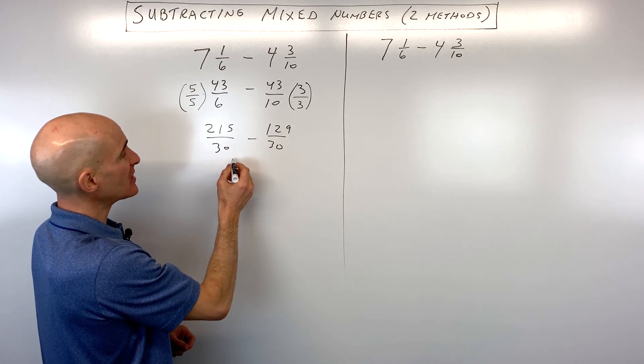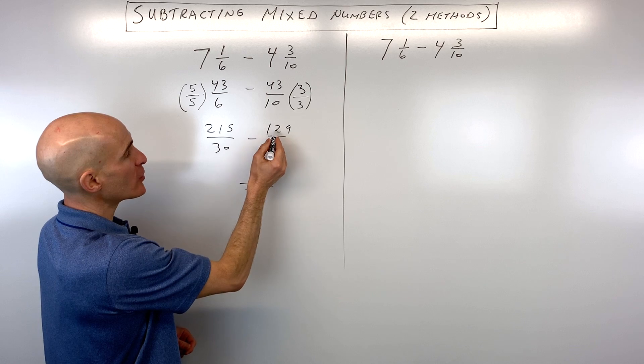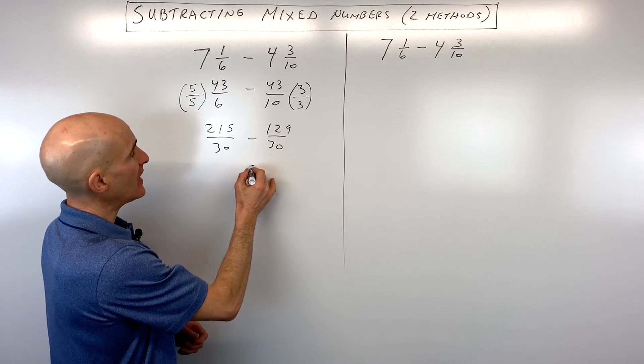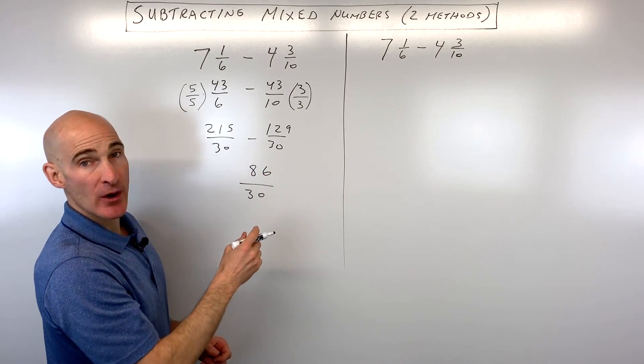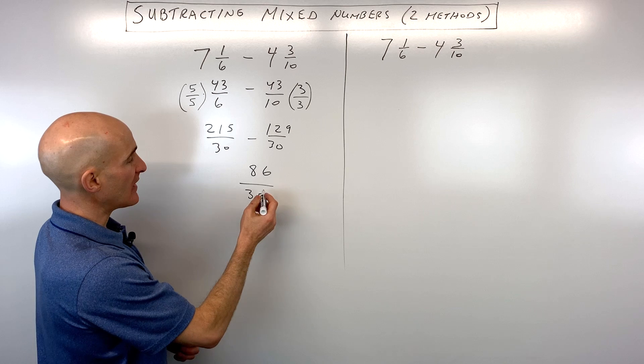Now, if we subtract, we just keep the common denominator, which is going to be 30, but you take the numerator minus the numerator. So 215 minus 129 is 86. You can do that work off to the side if you want, or you can use a calculator. So that's basically it.